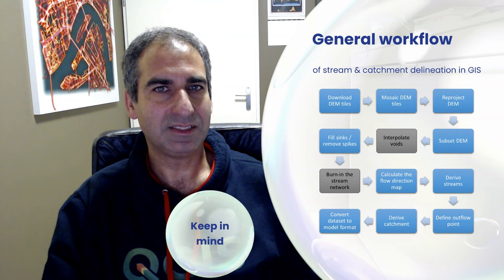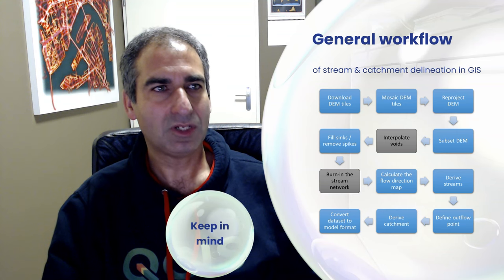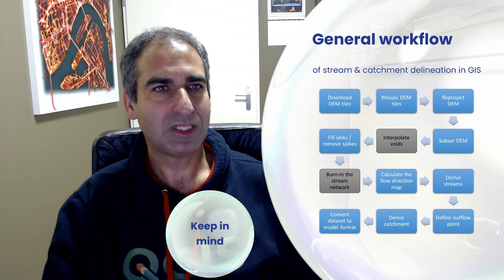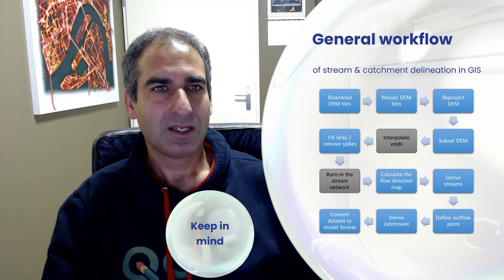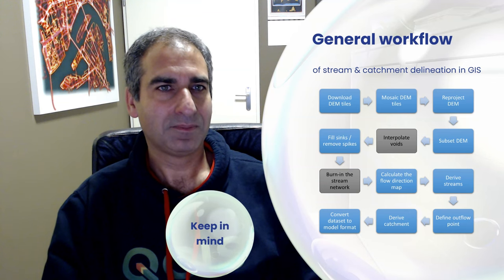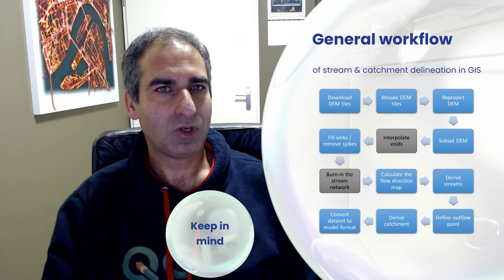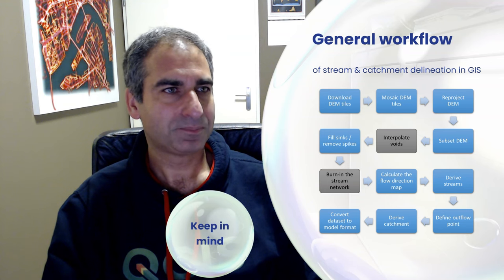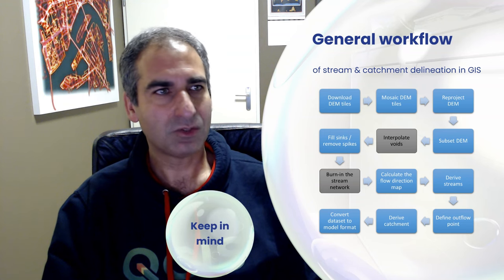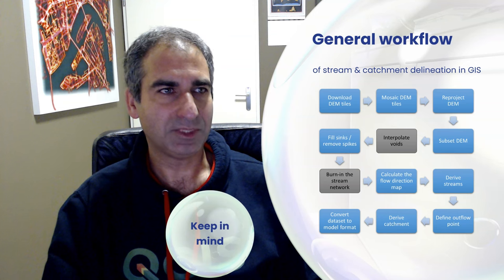Another challenge is that the DEM file is often too large, which slows down the calculations. Therefore, you need to clip the DEM to the study area. This needs some expert knowledge of the study area. However, if you clip it too small, you'll end up with a catchment with straight boundaries. So rather make it a little bit too big.